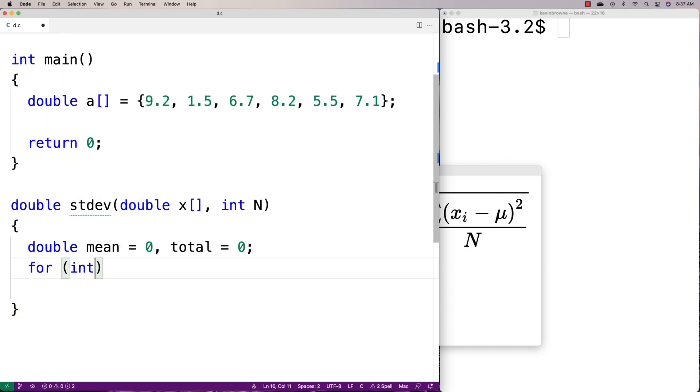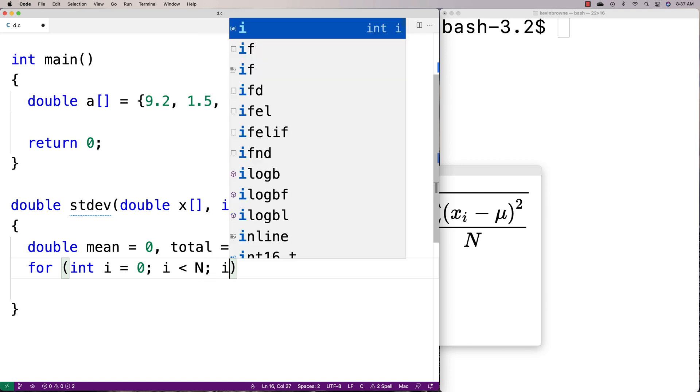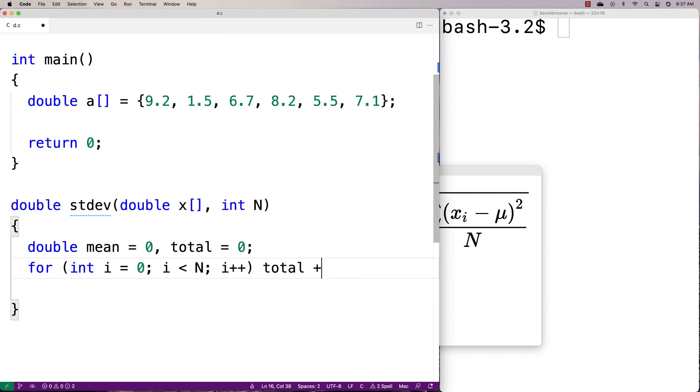We'll use a for loop: for int i equals zero, i less than n, i++. We're going to take each element and add it to the total. This loop will go from zero to n and look over each element in the array using index i, adding each element's value to the total. Then to compute the mean, we'll say mean equals total divided by n.